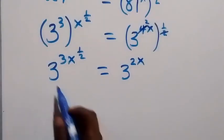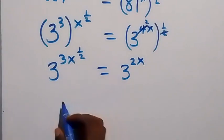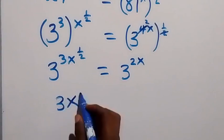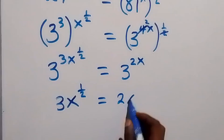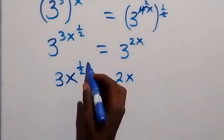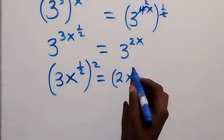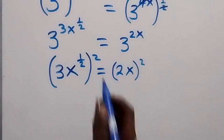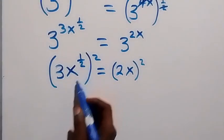We now have the same base on both sides, so we equate the powers. We have 3x raised to power half equals 2x. Then let's square both sides — we square this side and also square this side. The square affects the 3 and also the x raised to power half.